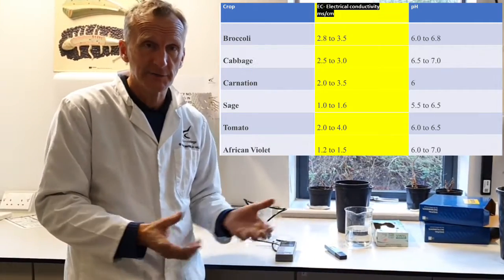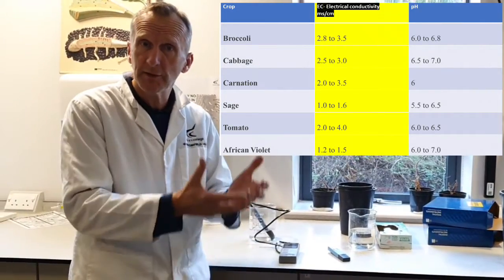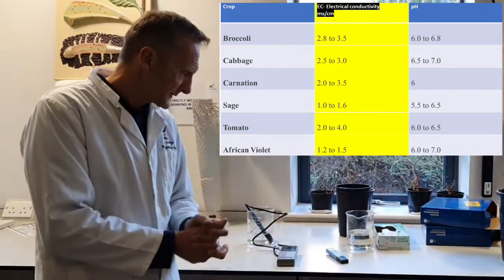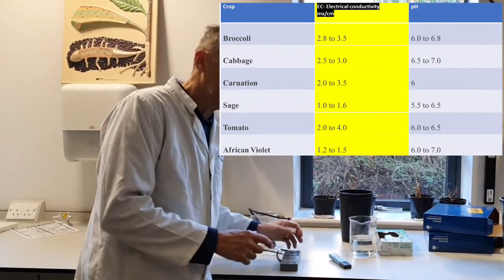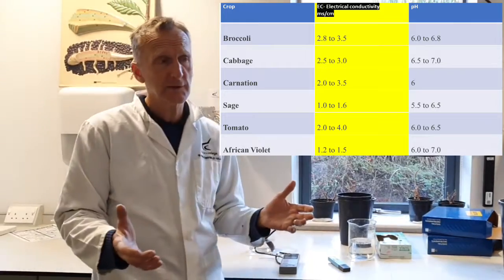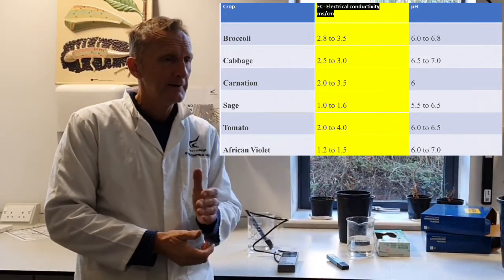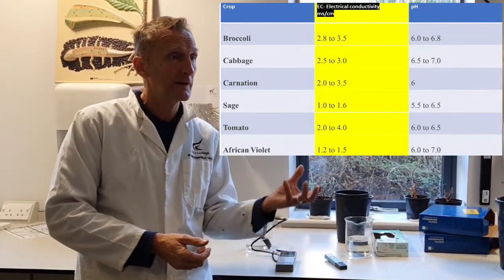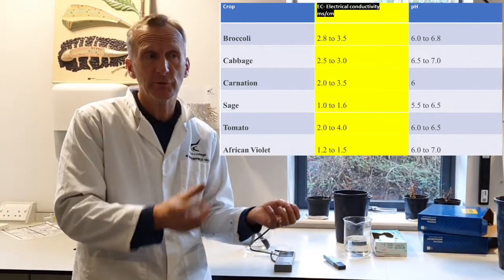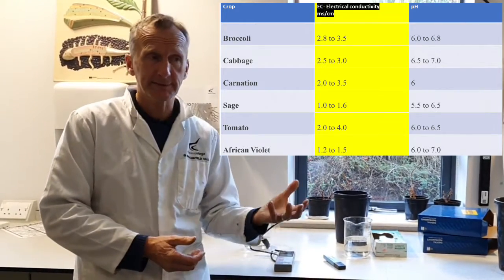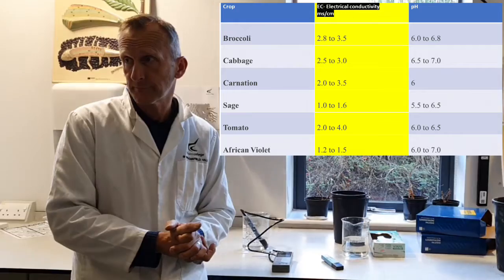If you have a reading of less than 1—1 is a good thing to remember—anything less than 1 and it's probably a bit too dilute, so there's not enough food for the plants.